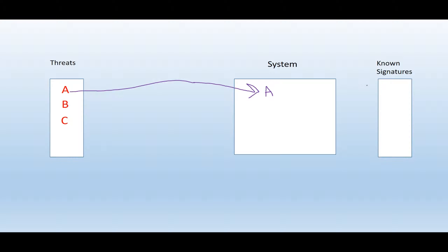In this case there are no known signatures, so threat A won't be compared with anything and it will be able to run its code and successfully delete files off your system. But the system will realize that threat A is actually something malicious and it will create a signature of this threat.